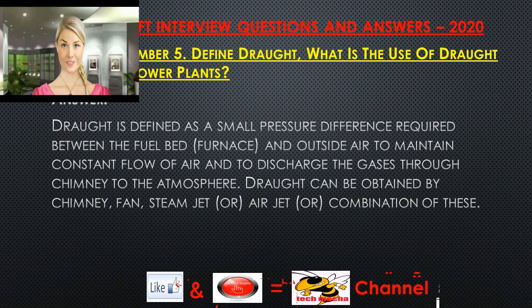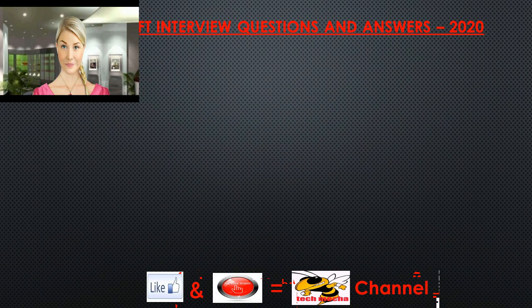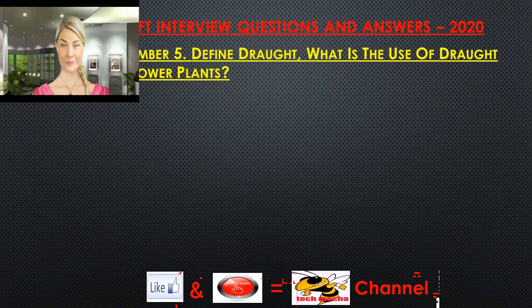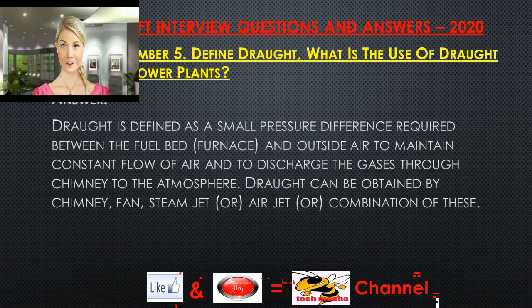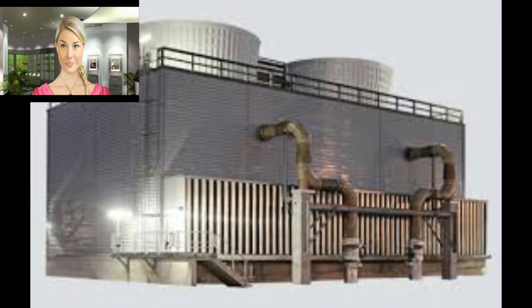Question 5: Define draft. What is the use of draft in thermal power plants? Draft is defined as a small pressure difference required between the fuel bed, furnace, and outside air to maintain constant flow of air and to discharge gases through the chimney to the atmosphere. Draft can be obtained by chimney, fan, steam jet, air jet, or a combination of these.